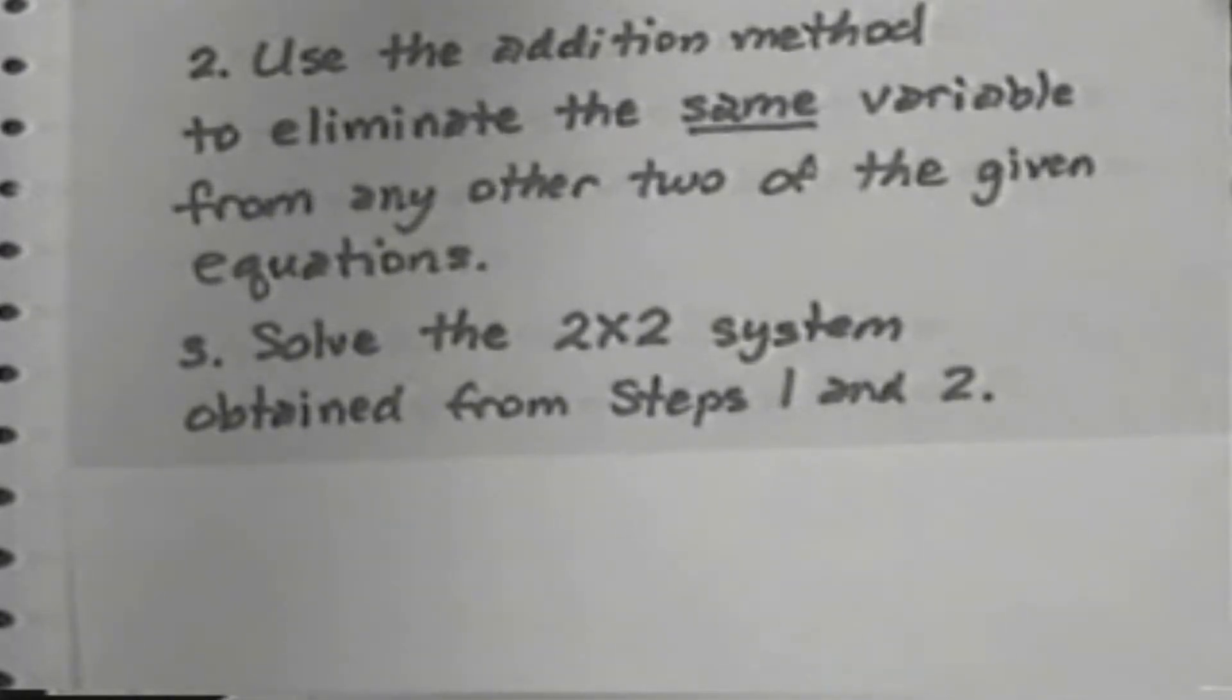When you solve the 2x2 system that you've obtained, you'll get answers for both of the letters in that system. That means that you've got the job two-thirds done. Two of the letters have numbers, number solutions. We must only get the remaining letter.